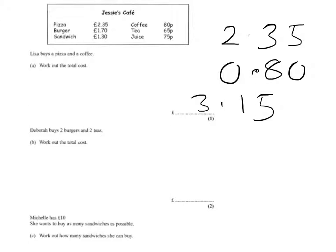We have two burgers. So we need 2 times 1.7, that's the cost for the burger, plus 2 times 0.65. That's the cost of the teas.